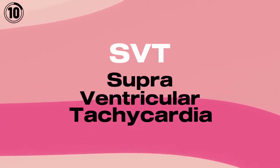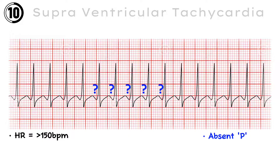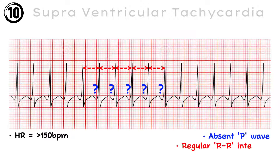ECG number 10: SVT, Supraventricular Tachycardia. In supraventricular tachycardia, heart rate is above or around 150 beats per minute. There is no P wave present, and the RR intervals are regular. The QRS complex is narrow — below 80 milliseconds.